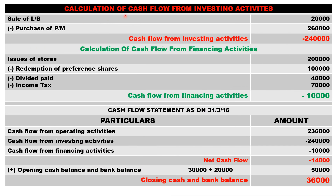Cash flow from investing activity: sale of land and building twenty thousand, less purchase of plant and machinery two lakh sixty thousand — net outflow of two lakh forty thousand. This is called cash outflow from investing activity.